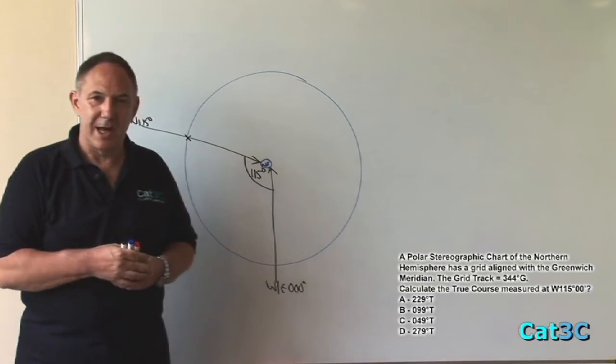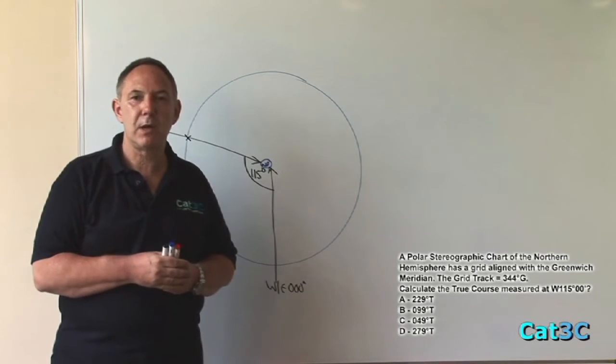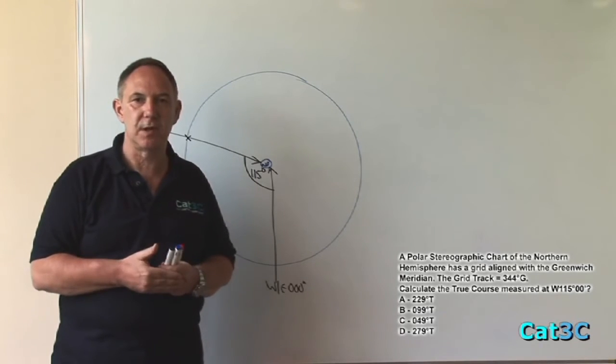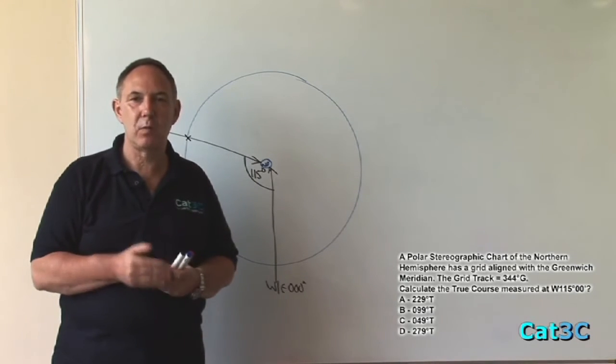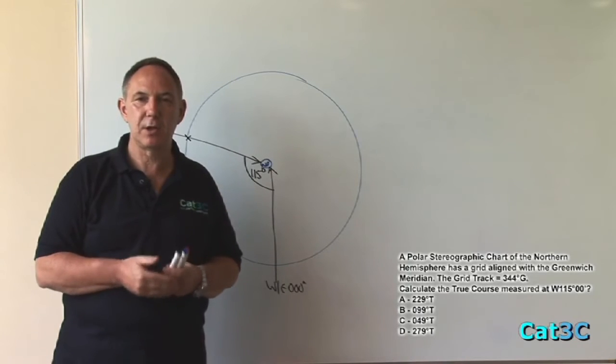Now the only other information I have is the grid track, which is 344 degrees grid. What we must remember is that grid tracks are constant. So wherever you measure them, they will be the same angle when measured from grid north.